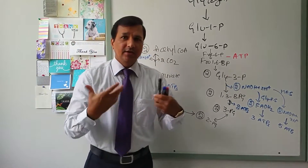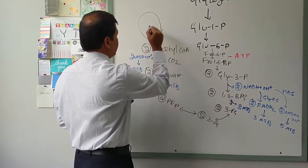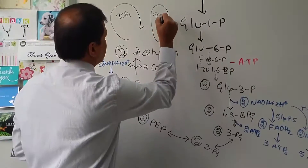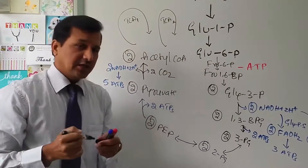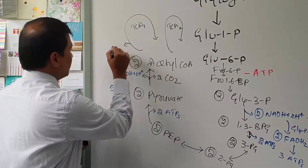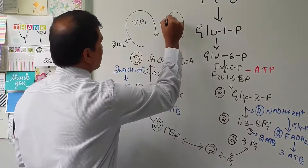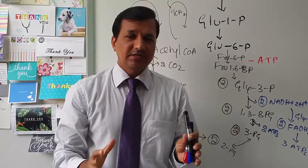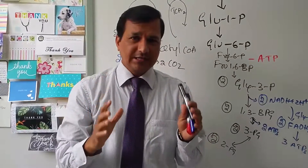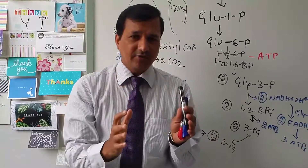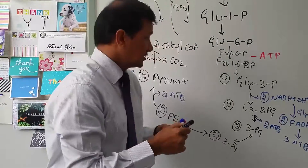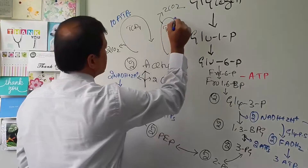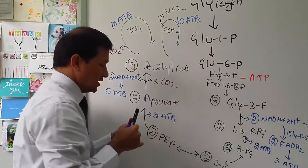The two acetyl-CoA molecules each undergo their own TCA cycle — so there are two TCA cycles running. In each TCA cycle, 2 CO₂ are released, and each cycle produces 3 NADH + H⁺, 1 FADH₂, and 1 GTP, which amounts to 10 ATPs per TCA cycle. Two TCA cycles therefore yield 20 ATPs.